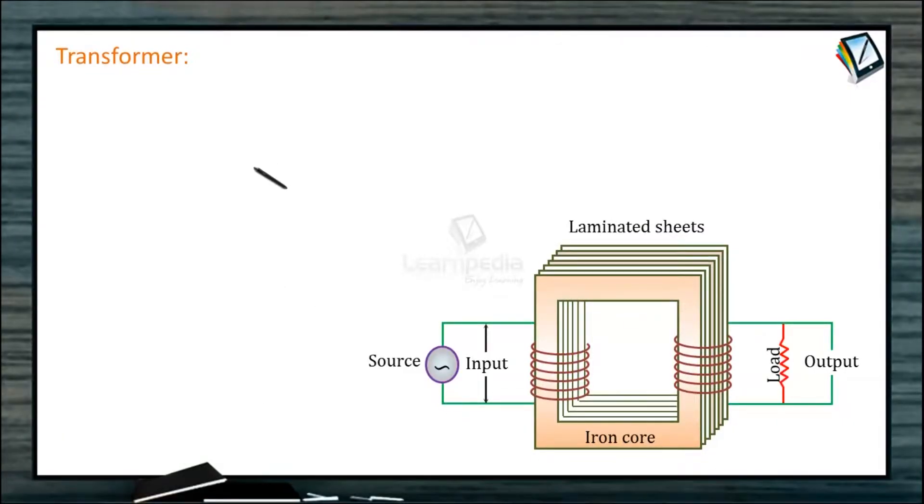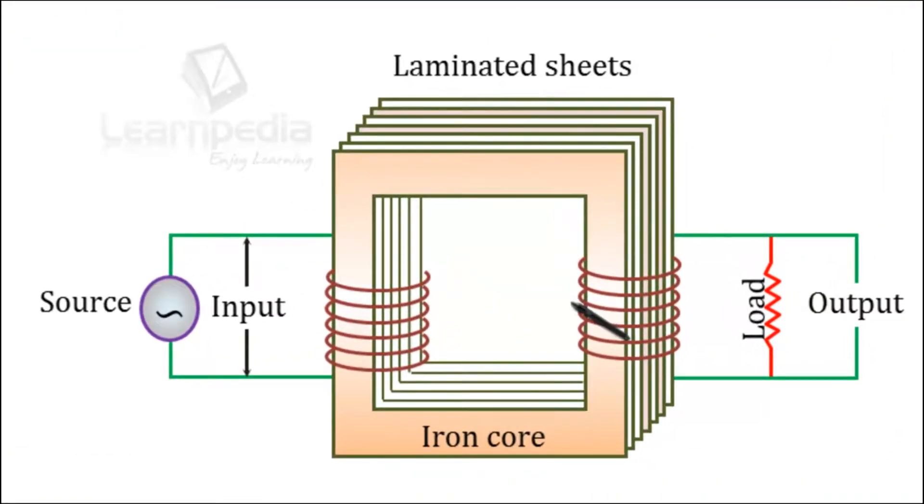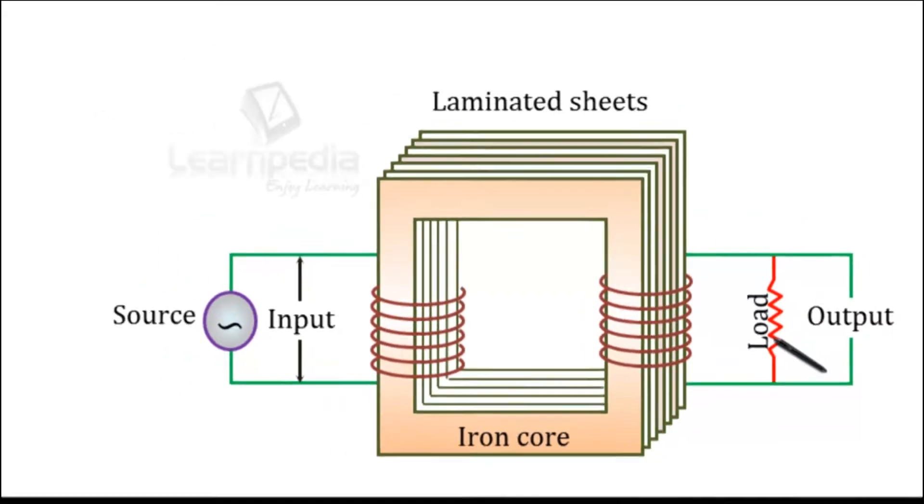A transformer is a device which raises or lowers the voltage in AC circuits through mutual induction. It consists of two coils wound on the same iron core. The alternating current passing through the primary circuit creates a continuously changing flux through the core. The changing flux induces an alternating EMF in the secondary circuit. Output is taken across the load.